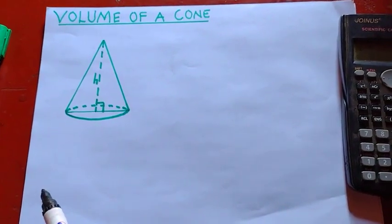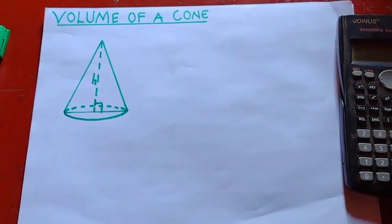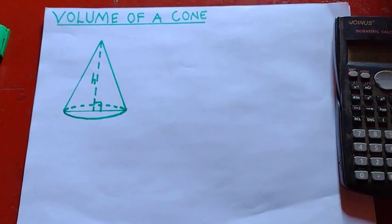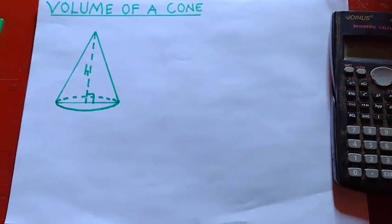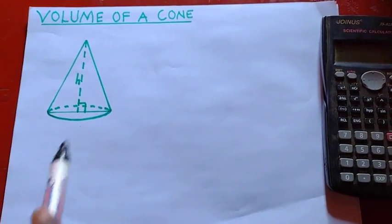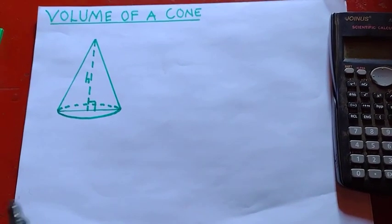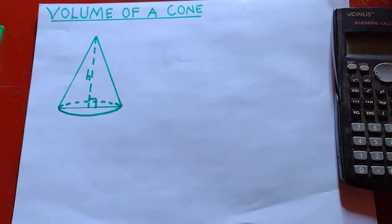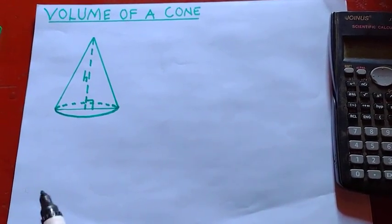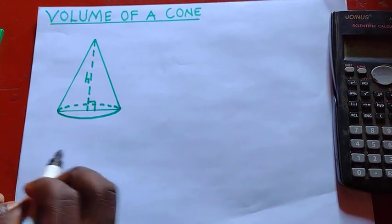Okay, so we understand that volume is the space occupied by an object. So how can we find the volume of this cone? So formulas are very important when it comes to mensuration.